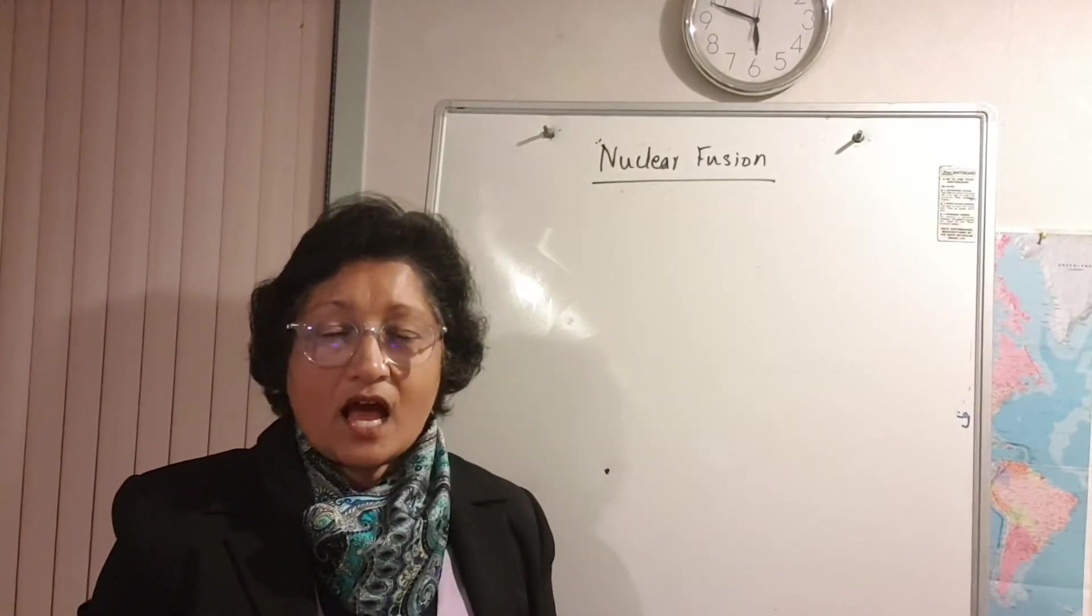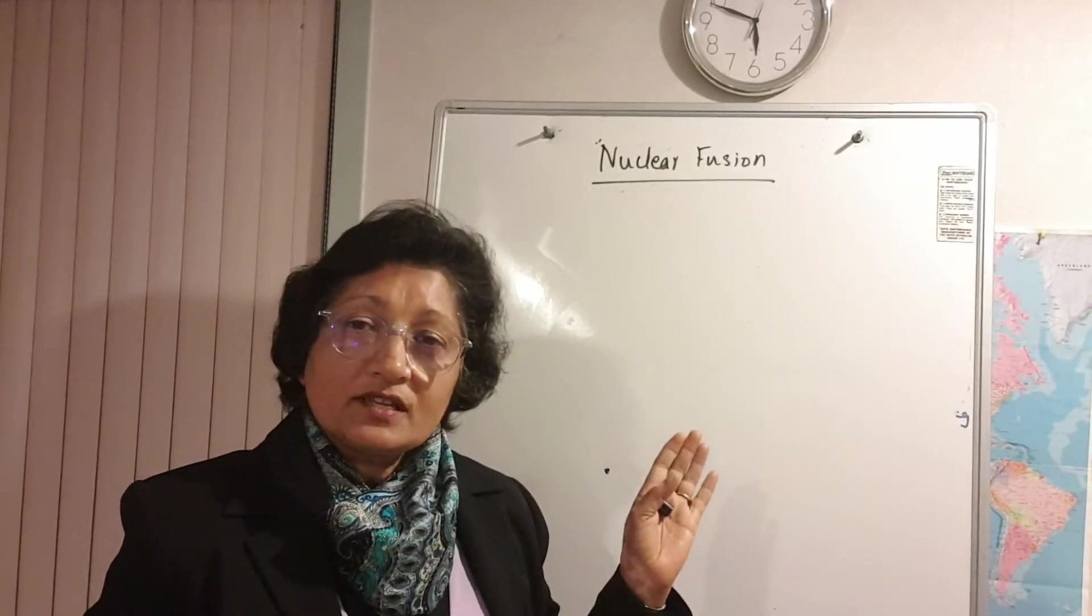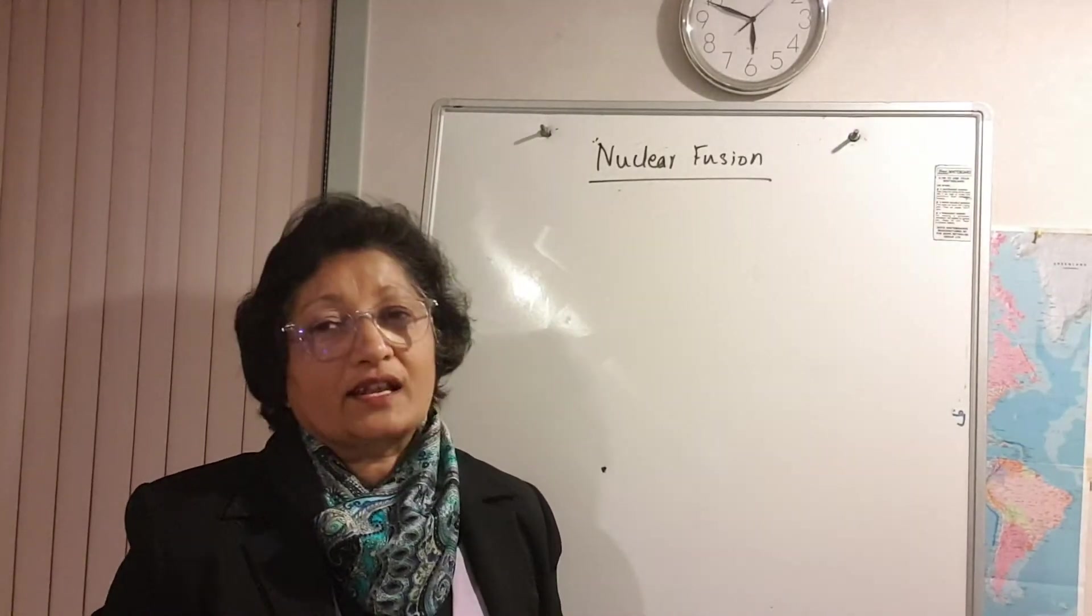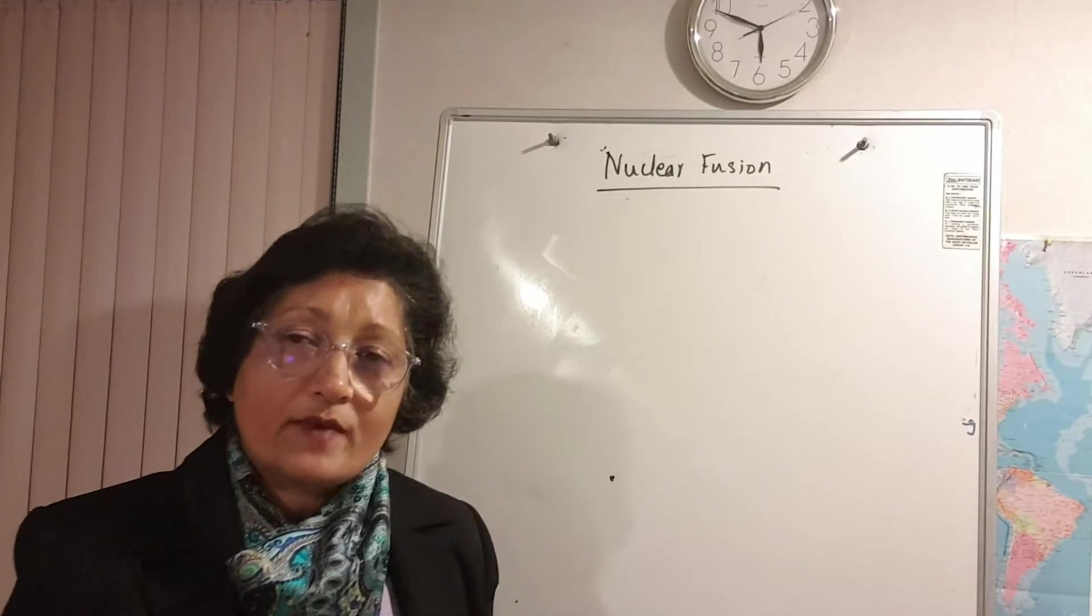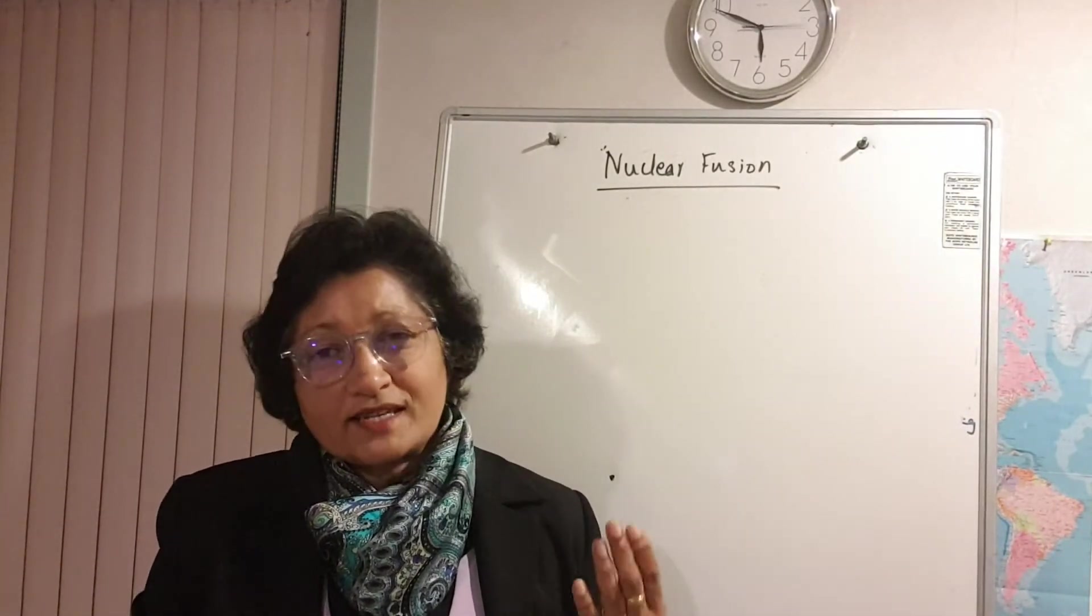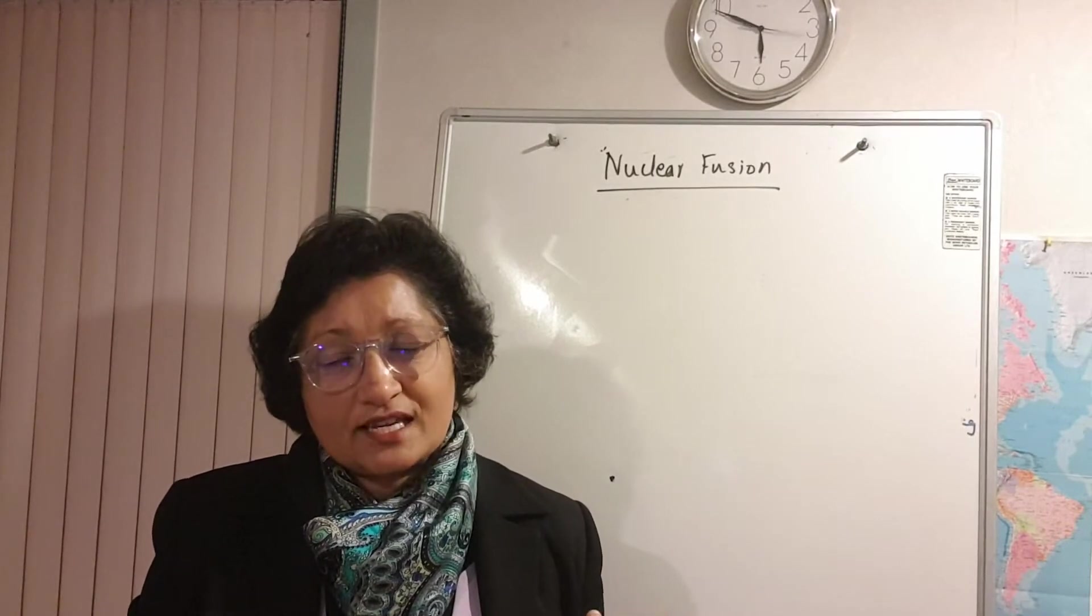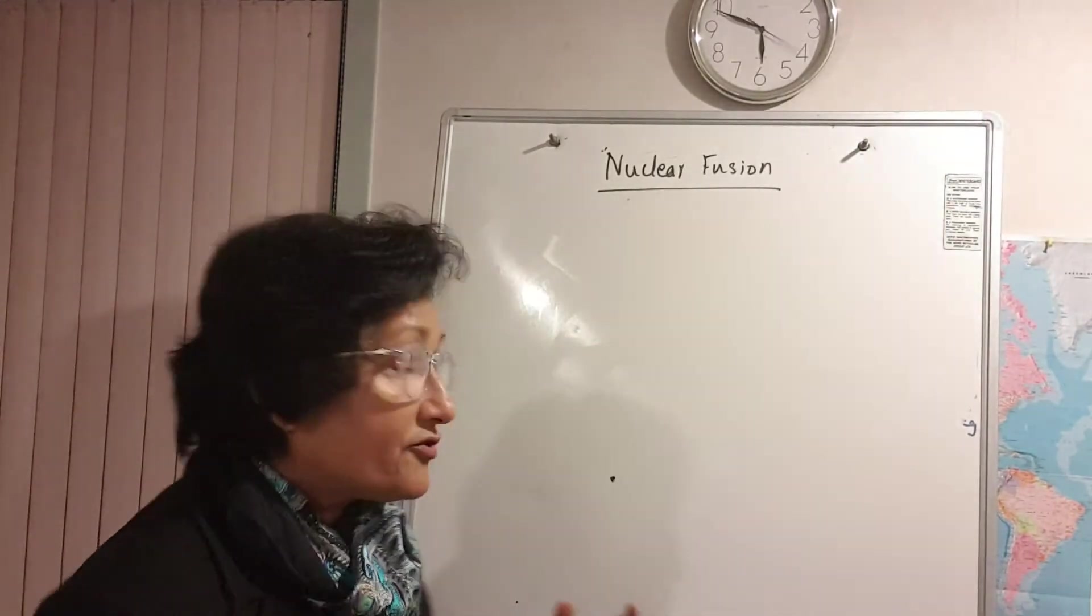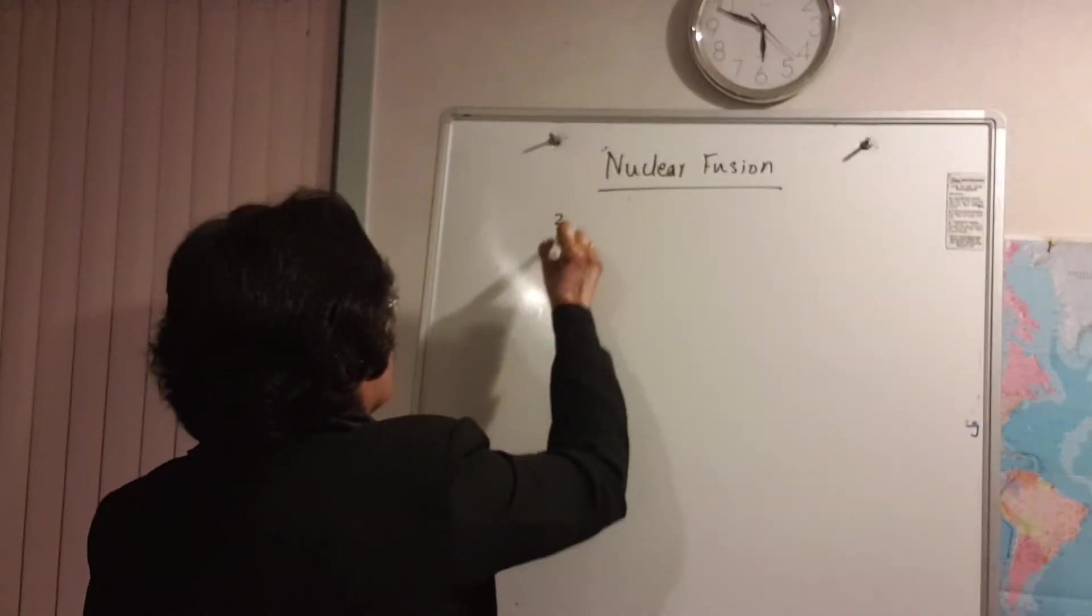So unlike nuclear fission which takes place in large nuclei, nuclear fusion is two relatively light nuclei come together and fuse to form a heavier more stable nucleus. What takes place in the Sun is usually isotopes of hydrogen like deuterium, for example.